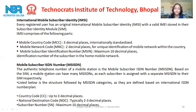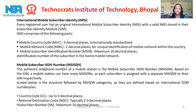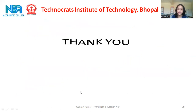The Mobile Subscriber ISDN Number — MSISDN — is the authentic telephone number of the mobile station. Based on the SIM, a mobile station can have many MSISDNs, as each subscriber is assigned a separate MSISDN to their SIM. The structure of MSISDN is defined based on the International ISDN number plan and includes: Country Code CC — up to 3 decimal places; National Destination Code NDC — typically 2 to 3 decimal places; and Subscriber Number SN — maximum 10 decimal places.